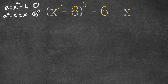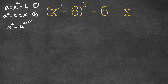Now I'm actually going to subtract both of these equations. I'm going to subtract x squared minus a squared. So x squared minus a squared, and what ends up happening is we get the result a minus x. So x squared minus a squared is equal to a minus x.